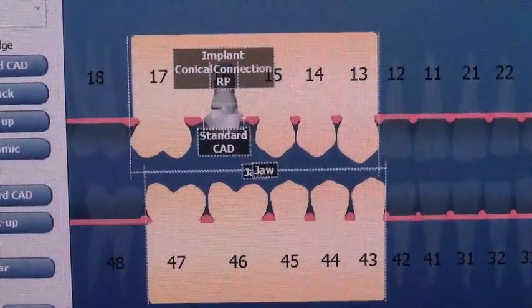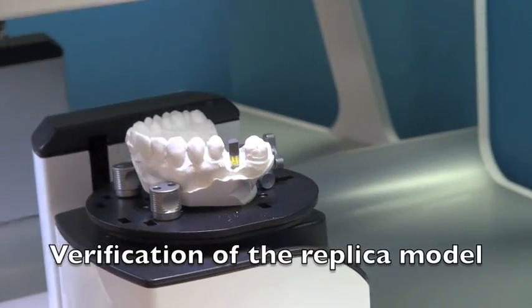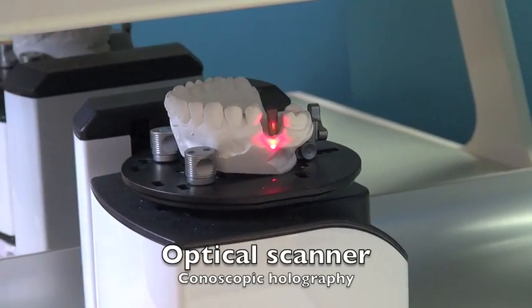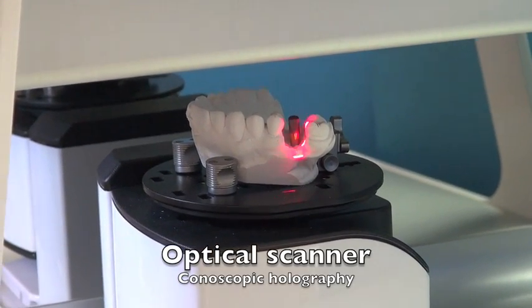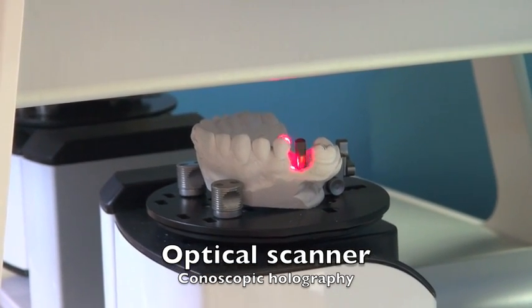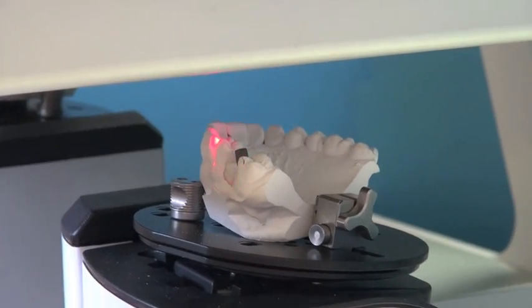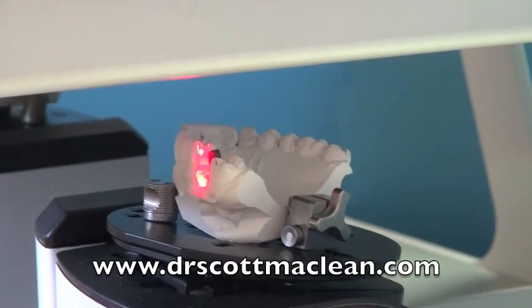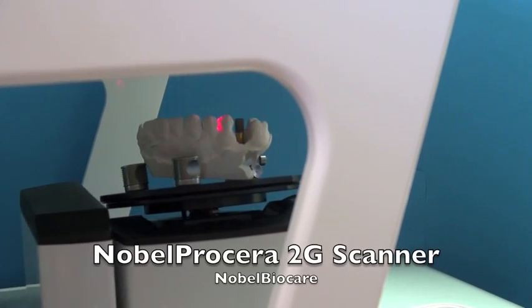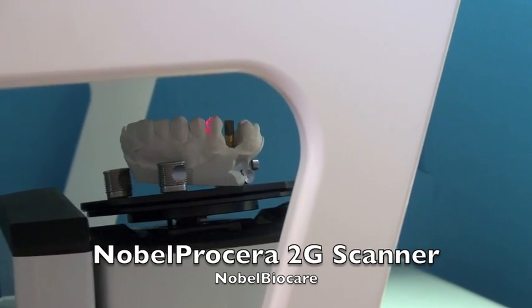We go back and pick some other teeth in the area because we want to make sure that we're going to have a bite. Then we go back into the scanner with the model and it starts to do the scanning. This is a conoscopic holography type of optical scanner that goes over top, measuring very exactly where the locator is, which orients later on to tell us where the replica is. This is a very efficient way of scanning a model and having it done very accurately.